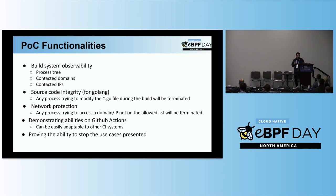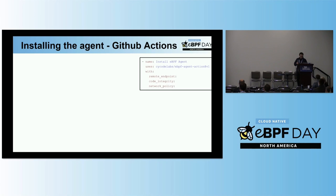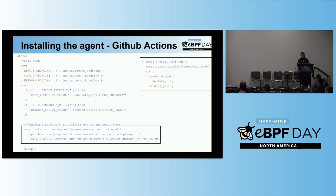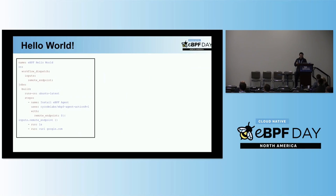The installation is quite easy — through what's called a custom GitHub Action. We just add the eBPF agent action in the CI. In short, for every installation I'm putting a Docker container in privileged, detached mode that installs Tetragon and the agent we wrote to secure the machine. For example, if we have a hello world CI in GitHub Actions, it has three parts: installing the eBPF agent, then running a 'ls' command and a curl to google.com.